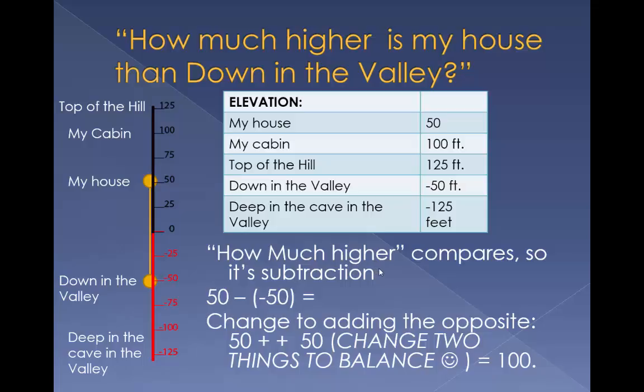50 minus negative 50. But when we change to adding the opposite, it's 50 plus positive 50. You've always got to change two things to balance. And that means you're going to add to solve the problem. To find the distance, you need to get to zero, and then get down into the negative territory. You need to add the distances.